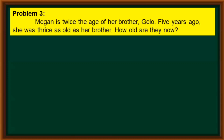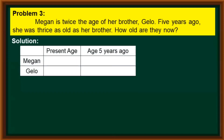Let us now proceed to our last problem. Megan is twice the age of her brother Jello. Five years ago, she was thrice as old as her brother. How old are they now? We create a table to organize the given data. If we let Jello's age equal x, then Megan's age is 2x. To get their ages five years ago, we subtract 5: Jello's age was x minus 5, and Megan's age was 2x minus 5.